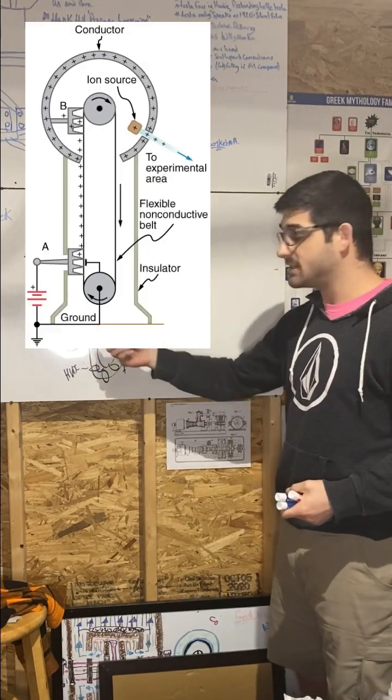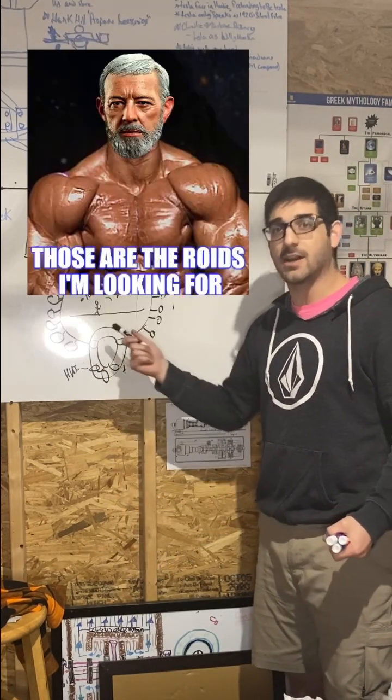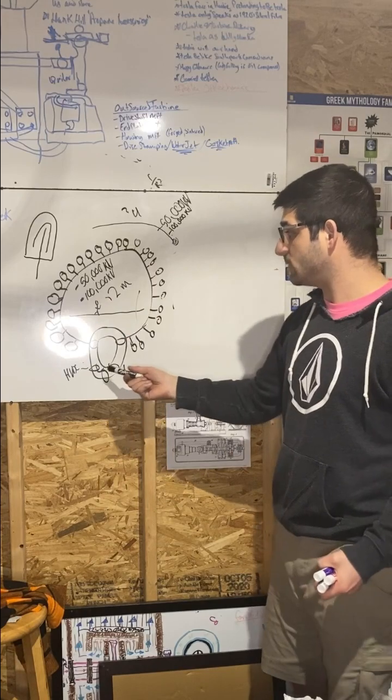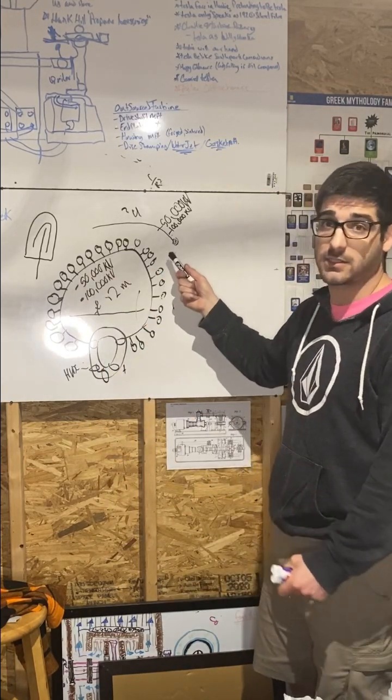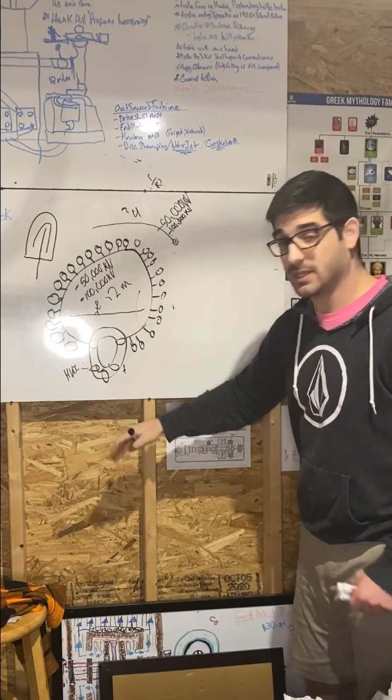And then Tesla's, I like to say, this is a Van de Graaff ion accelerator on steroids. Because what he made possible was not only can you take this up to much higher voltages, which means you can get much higher acceleration rates, meaning your nozzle and your whole thing can be smaller.